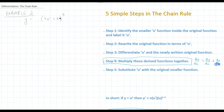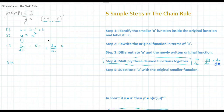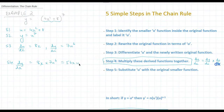Let's look at another example. y equals (4x² + 8) to the power of 7. Step one: identify the smaller function, which is 4x² + 8, so u equals 4x² + 8. Step two: rewrite the original function in terms of u, so y equals u to the 7th. Step three: differentiate both functions — du/dx will be 8x, and dy/du will be 7u to the 6th. Step four: multiply them together — 8x times 7u to the 6th, which is 56xu to the 6th.